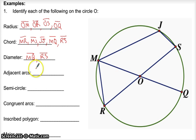Adjacent arcs. We need arcs first. What's an arc? JS is an arc. It's a tiny little arc, a minor arc. Those are the kind of arcs we like. Adjacent to that, we need another arc that has an endpoint at J or S. I could say MJ, I could say RJ, I could say SQR. Let's just say SQ.